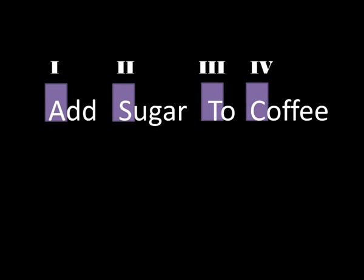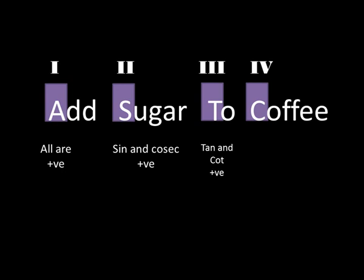For the first quadrant, 'A' stands for All — all trigonometric ratios are positive in the first quadrant. For the second quadrant, 'S' stands for Sine, and the opposite of sine is cosec — so in the second quadrant, only sine and cosec are positive; all other ratios are negative. For the third quadrant, 'T' stands for Tan, and the opposite of tan is cot — so only tan and cot are positive, and all others are negative. For the fourth quadrant, 'C' stands for Cos, and the opposite of cos is sec — so in the fourth quadrant, only cos and sec are positive and all others are negative.